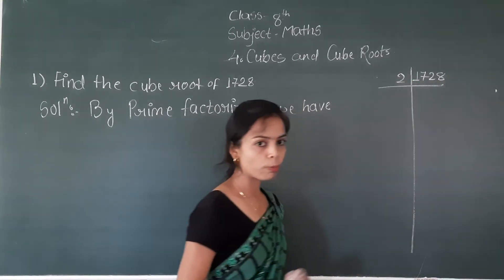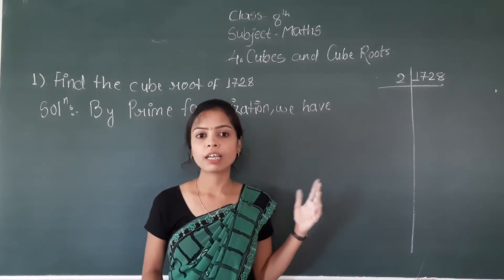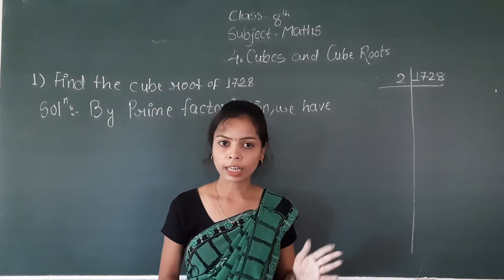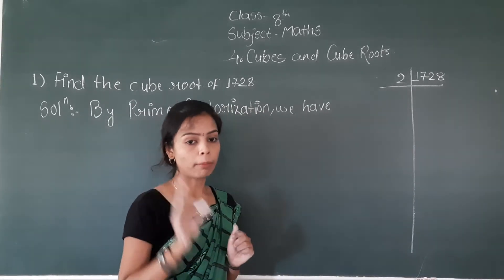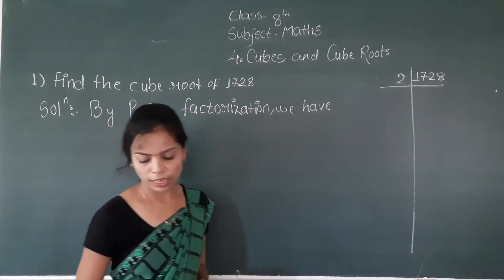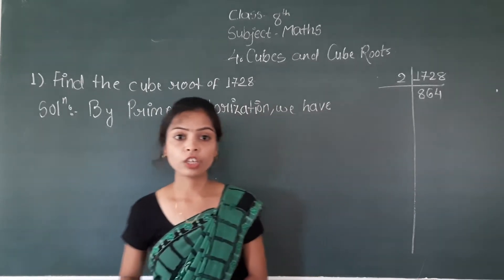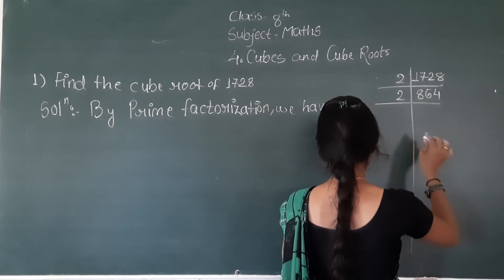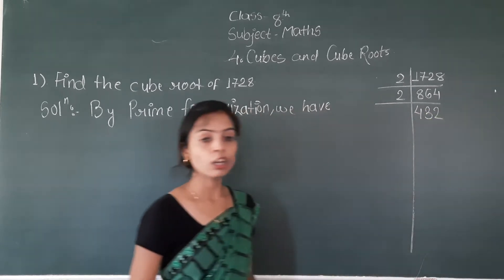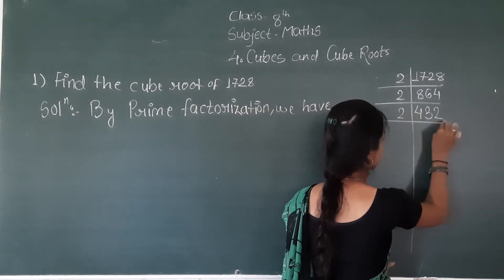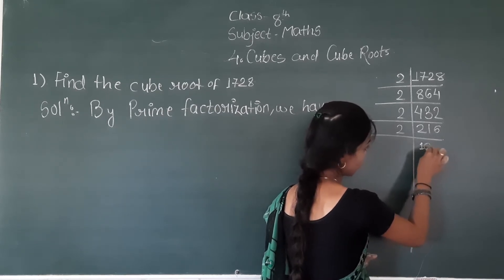What will be your answer? Your answer will be 864. Now again divide this 864 by 2. Again divide this 864 by 2 — what will be your answer? 432. Now again divide this 432 by 2, the answer will be 216. Again divide this 216 by 2, the answer will be 108.